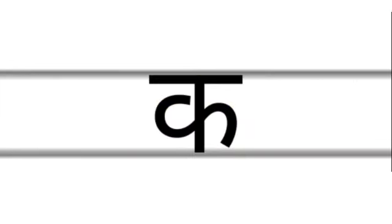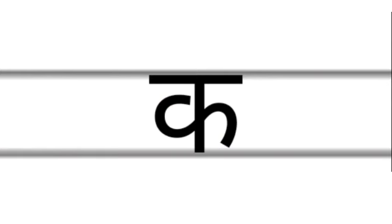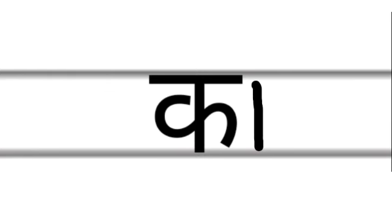First letter: Ka. There is no matra. Second letter: Kā. How do you write Kā? Add a standing line on the right side of the consonant letter Ka. What is this letter, children? Kā.